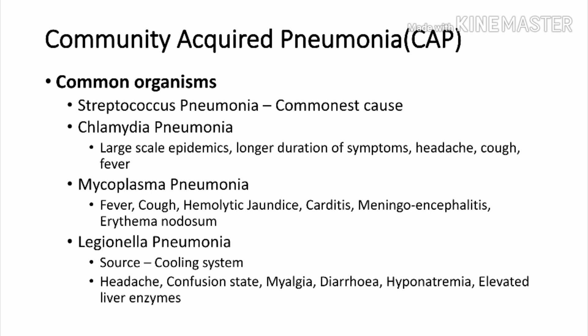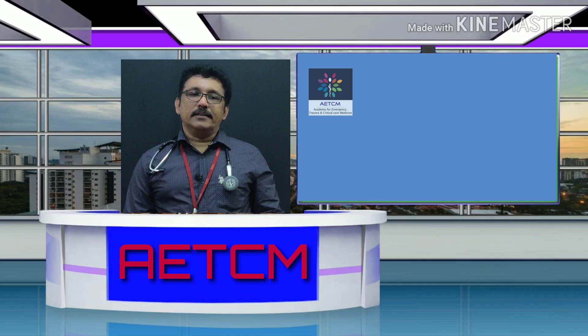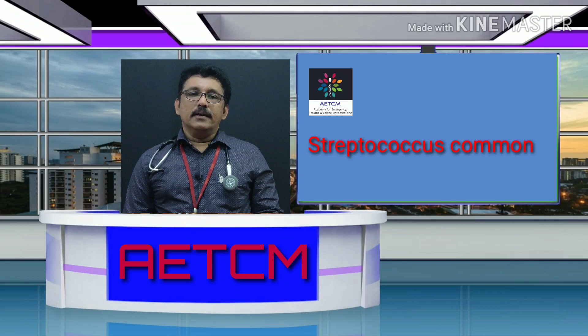Streptococcus pneumoniae classically presents with cough, breathlessness, and sputum production. But other organisms — Chlamydia, Mycoplasma, Legionella — produce atypical symptoms like hemolytic jaundice, carditis, hyponatremia, diarrhea, and confusional state. These are called atypical pneumonias. The commonest organism for community acquired pneumonia is always Streptococcus pneumoniae.